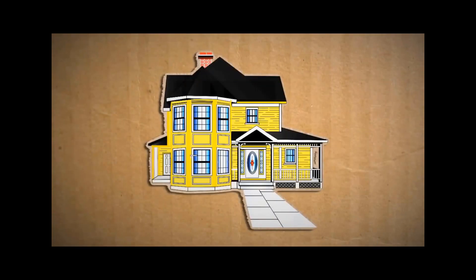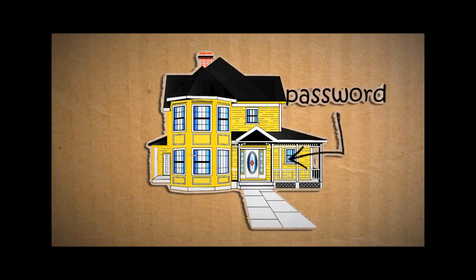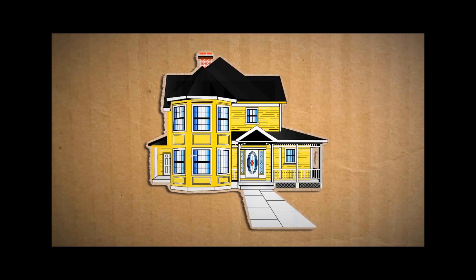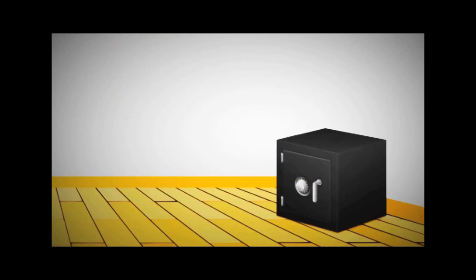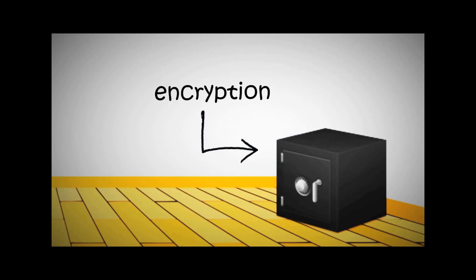Let's look at it in terms of physical security at a house. Most people rely on their computer's login password as their main means of security. This is equivalent to the lock on the front door of a house. While it's good for the first line of defense, it's not resistant to back doors or brute force. Those that have sensitive information generally keep it in a safe inside their house — this is equivalent to encrypting the files on your computer.